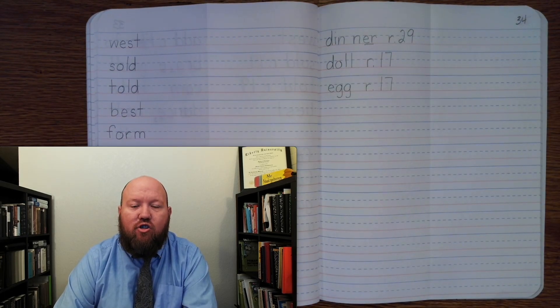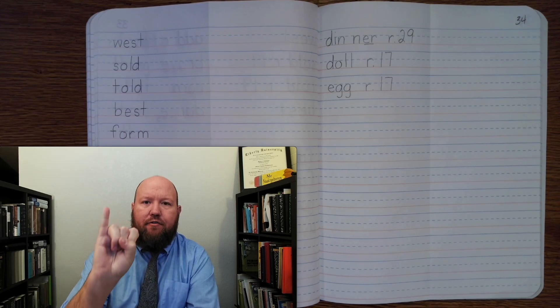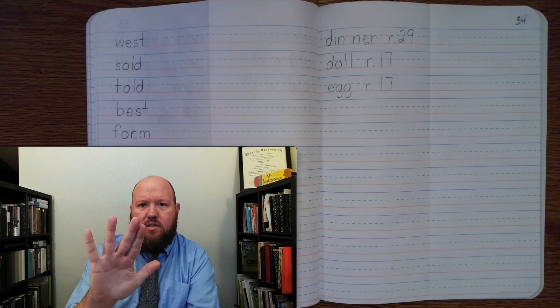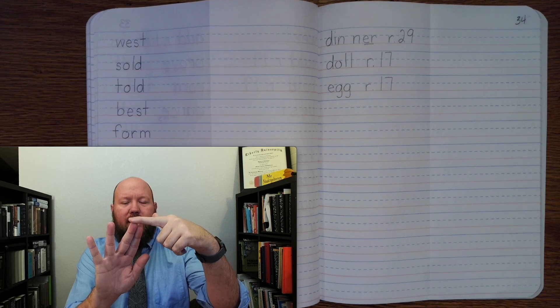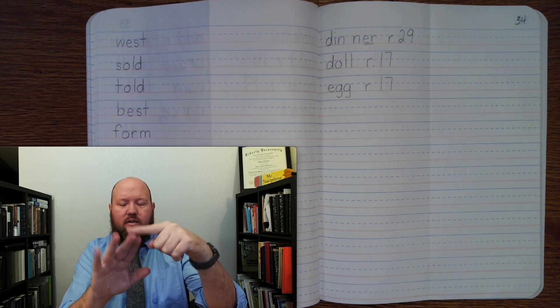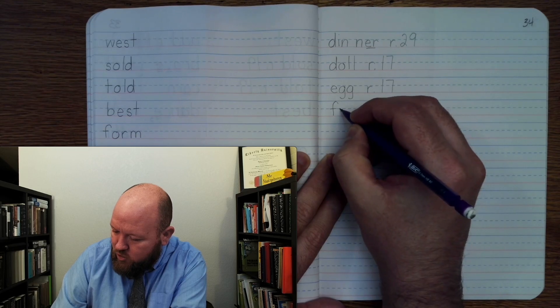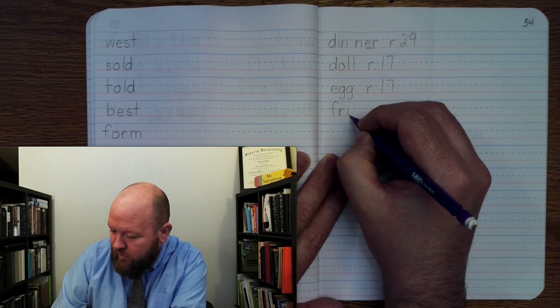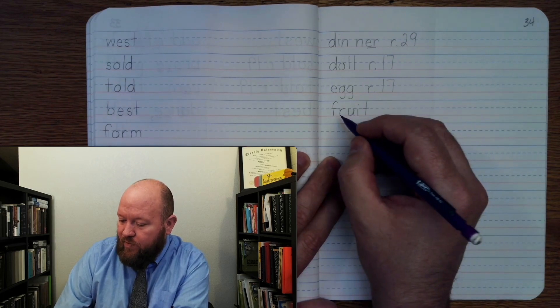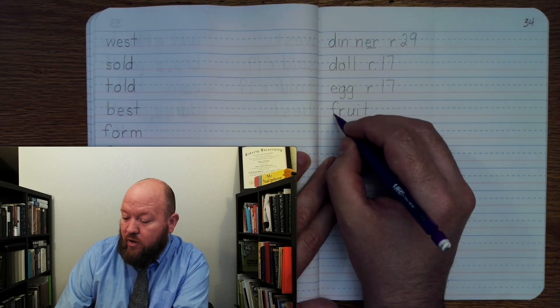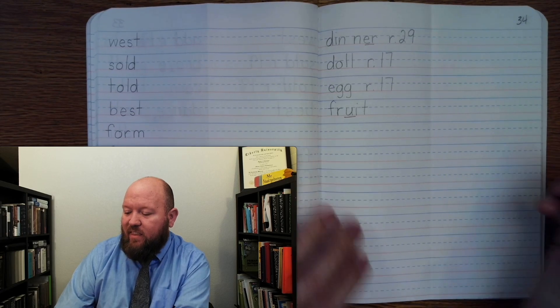The next word is fruit. Like an apple is a fruit. Fruit. Base word fruit. F-R-U-I-T. Fruit. Now we're going to use U-I, not U used. Do you remember what that is? U-I. Fruit. F-R-U-I-T. Fruit. Markings. F-R-U-I-T.